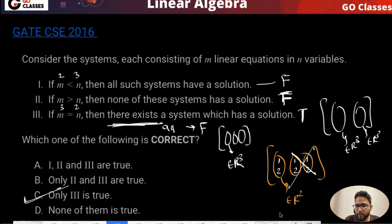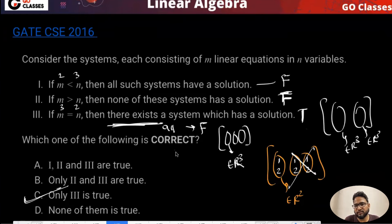How are they saying that for C solution is possible if three linearly independent - it depends on B. Yeah, you're right. There exists a solution, then the answer is yes.